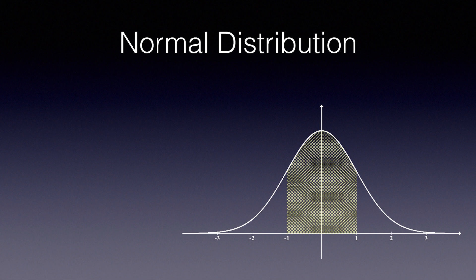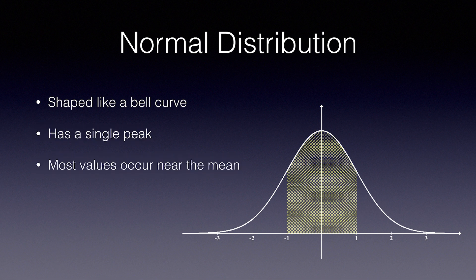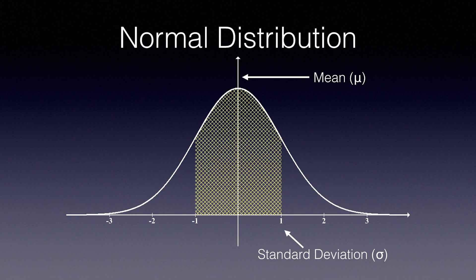Let's make some observations about the normal distribution. First, it's shaped like a bell curve with a single peak in the middle — most values occur near the mean. It's also symmetric: half the values are above the mean, half below. The probability tapers off as we move further from the mean. A normal distribution is defined by the mean, denoted by the Greek character mu, and the standard deviation, denoted by the Greek character sigma. The mean is the average of all measurements, and the standard deviation is a measure of how spread out the distribution is. To turn any dataset into a normal distribution, simply calculate the mean and the standard deviation, and you can then get a precise probability for any arbitrary measurement range.